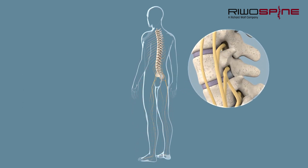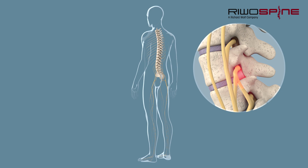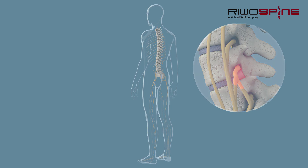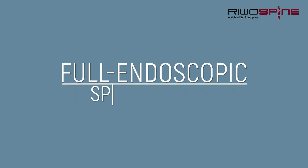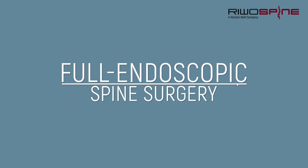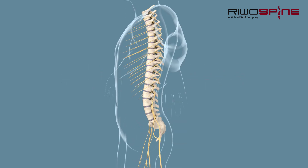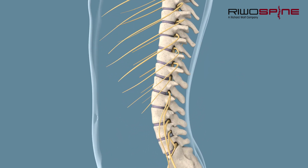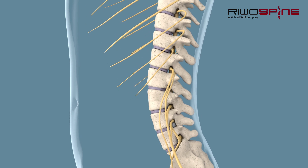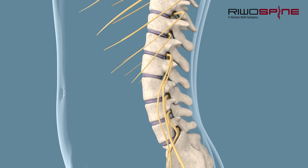After a detailed examination, consultation, and treatment by a doctor, surgical removal of intervertebral disc tissue for decompression of nerve structures may be necessary. The so-called full endoscopic technique is a standard, minimally invasive method for spine surgery that allows the complete removal of a herniated disc and decompression of nerves through a small skin incision and little trauma.